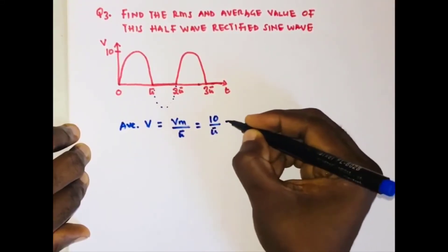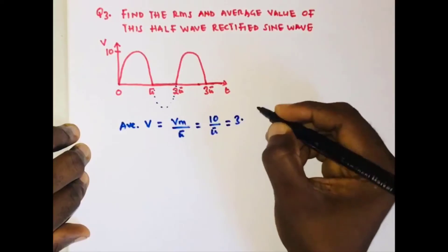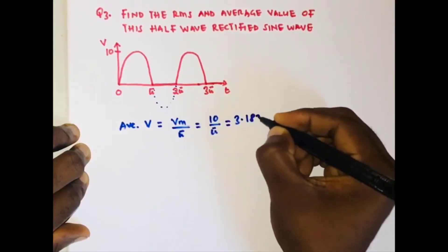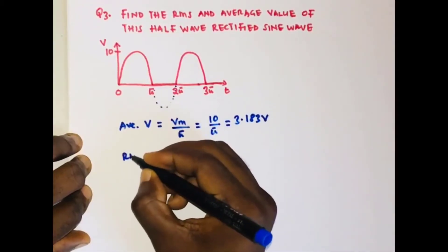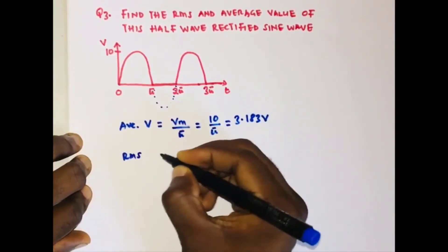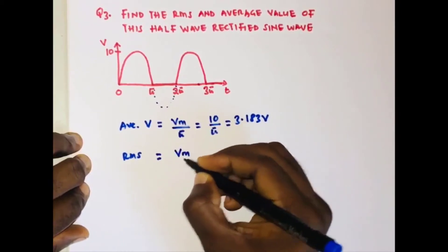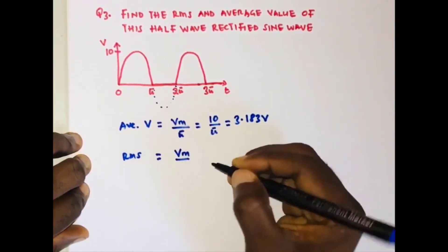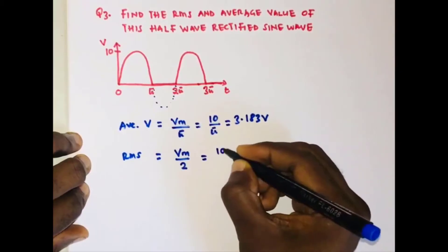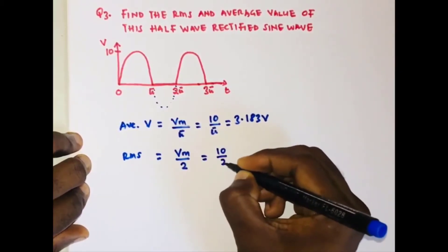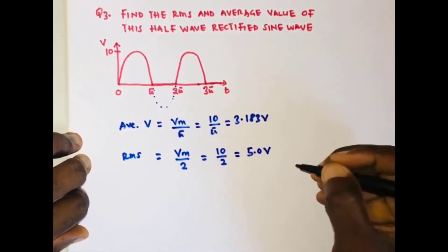That gives us 3.183 volts. The RMS value is equal to the peak value divided by 2, so we have 10 divided by 2, which is equal to 5 volts.